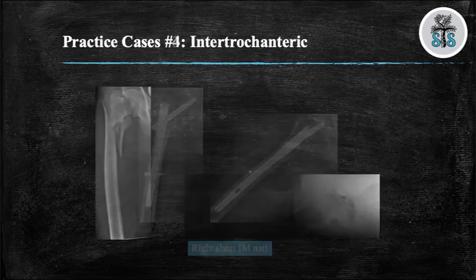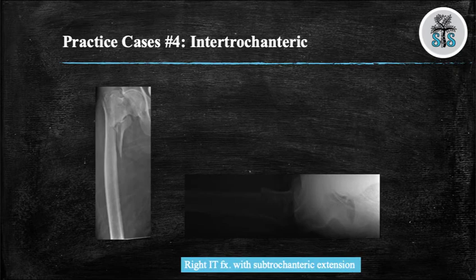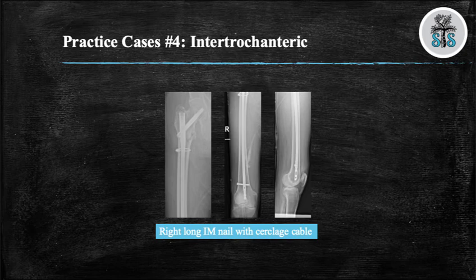Case 4: We have two views, AP right hip and cross-table lateral of a right hip in a skeletally mature individual, demonstrating an IT fracture with subtrochanteric extension. There is also a butterfly fragment on the posterior medial aspect. This fracture is unstable, therefore it was treated with a long cephalomedullary nail and a cerclage cable.